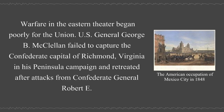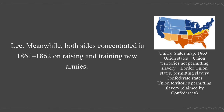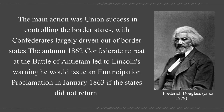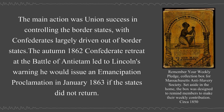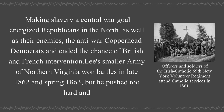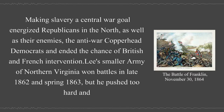Warfare in the eastern theater began poorly for the Union. General George B. McClellan failed to capture the Confederate capital of Richmond, Virginia in his Peninsula Campaign and retreated after attacks from Confederate General Robert E. Lee. Both sides concentrated in 1861–1862 on raising and training new armies. The main action was Union success in controlling the Border States, with Confederates largely driven out. The autumn 1862 Confederate retreat at the Battle of Antietam led to Lincoln's warning he would issue an Emancipation Proclamation in January 1863 if the states did not return. Making slavery a central war goal energized Republicans in the North and ended the chance of British and French intervention.